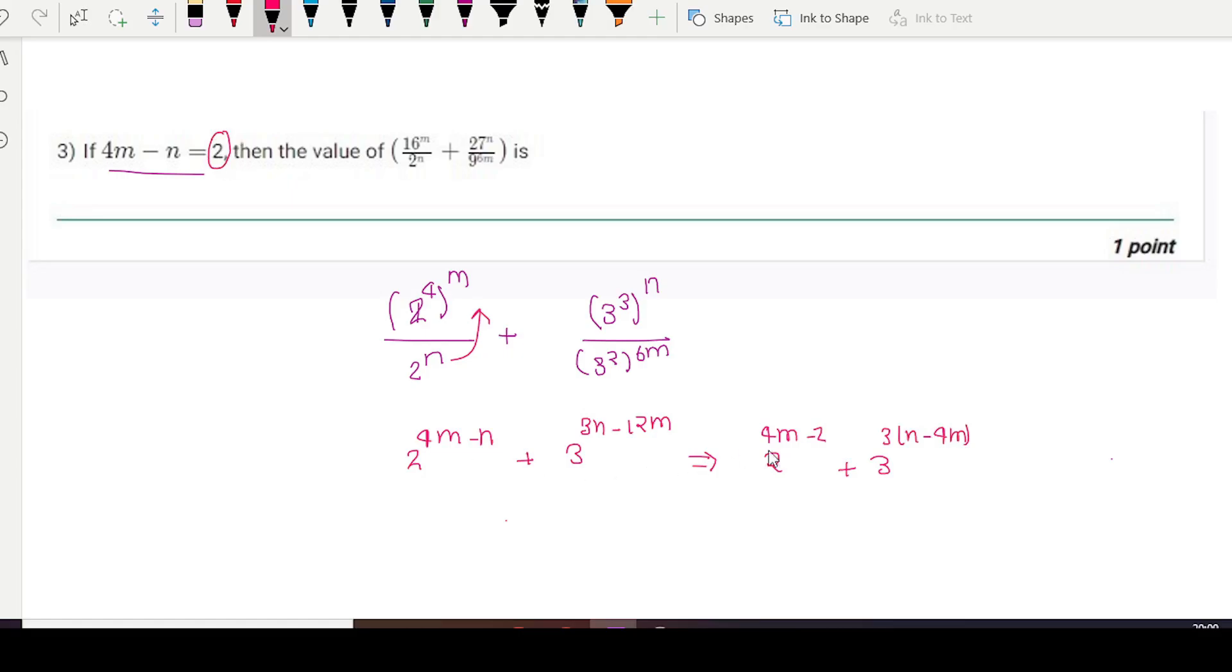Here it is given 4m minus... sorry, it is n. My mistake. So 4m minus 2n is given as 2.